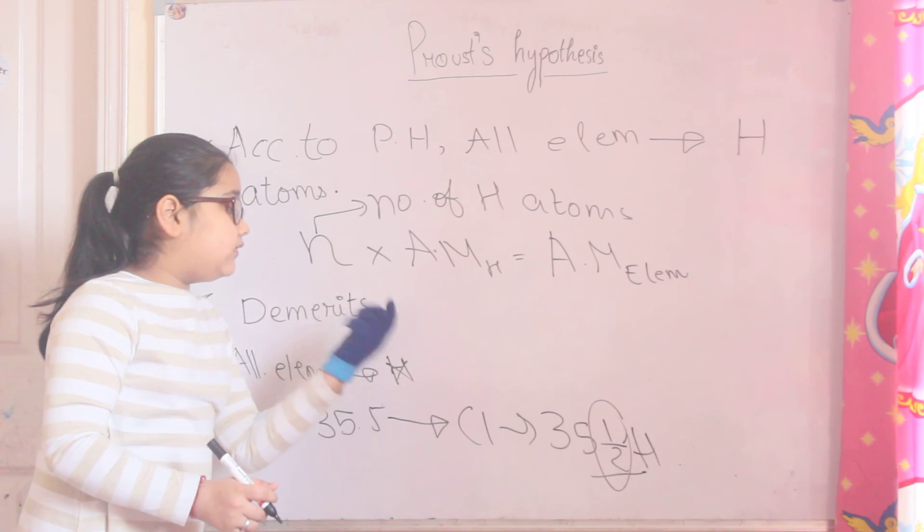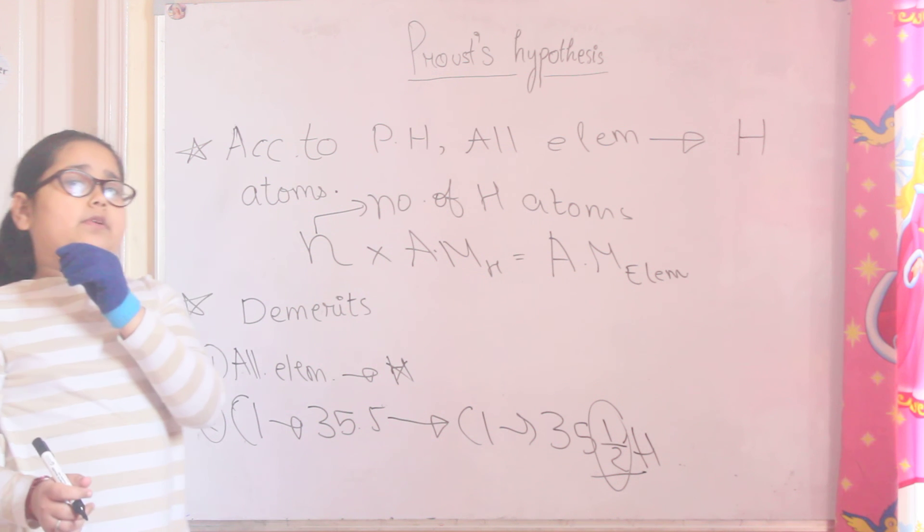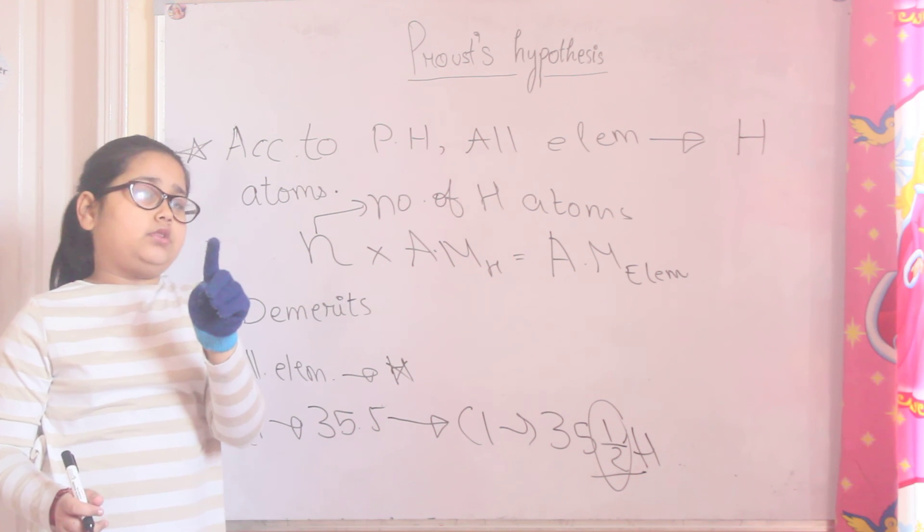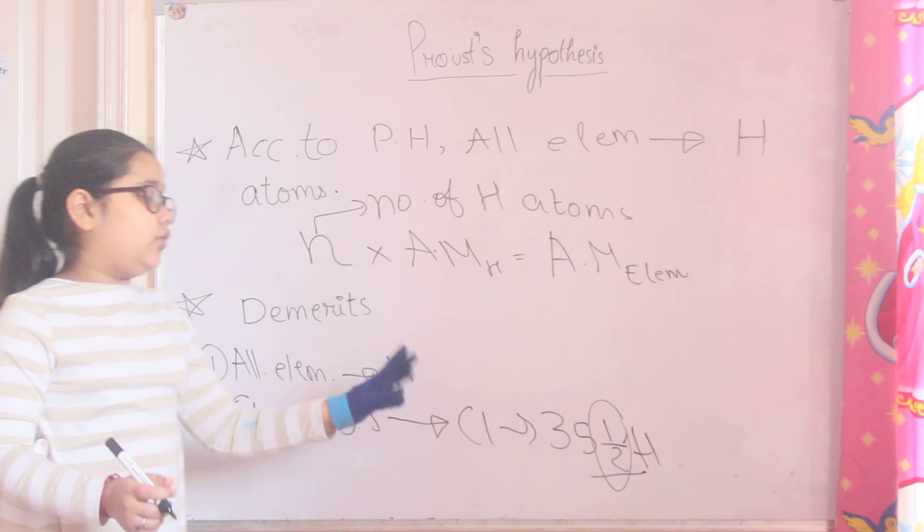And secondly, which elements of atomic mass are in decimal, it's not applicable because atom is one whole atom. There is not half atom, there is not one third atom.